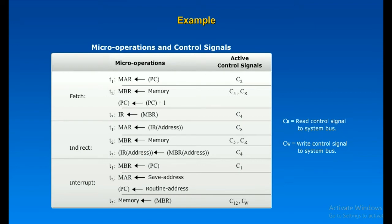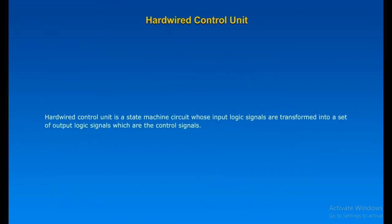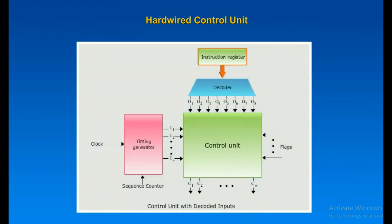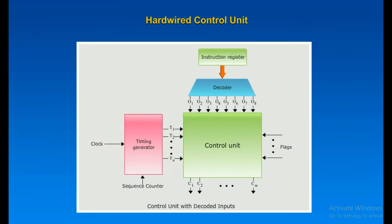In a hard-wired implementation, the control unit is essentially a state machine circuit. Its input logic signals are transformed into a set of output logic signals, which are the control signals. The control unit makes use of the opcode and will issue a different combination of control signals for different instructions. To simplify the control logic, there should be a unique logic input for each opcode. This function can be performed by a decoder, which takes an encoded input and produces a single output. In general, a decoder will have n binary inputs and 2^n binary outputs.